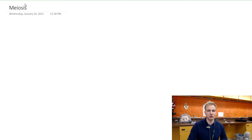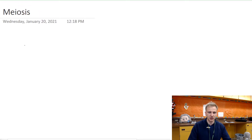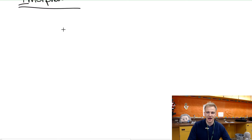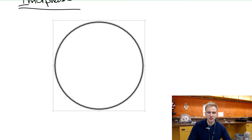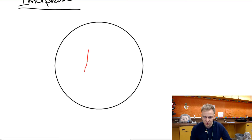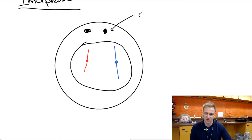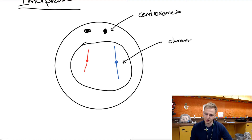We're going to start in the exact same place as mitosis: interphase. In interphase the genetic material is being duplicated. We'll start with one red chromosome and one blue chromosome inside the cell. We have the nuclear membrane present, the centrosomes at the top of the cell — same as mitosis — and the chromosomes present inside the cell. This is called a 2n cell, or a diploid cell.